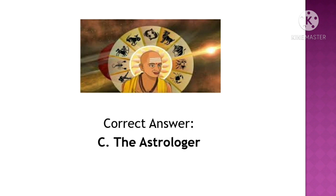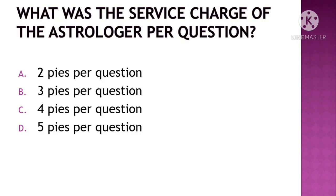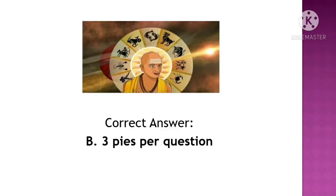Next question: What was the service charge of the astrologer per question? The options are: A. Two paise per question, B. Three paise per question, C. Four paise per question, D. Five paise per question. The correct option is Option B, three paise per question.